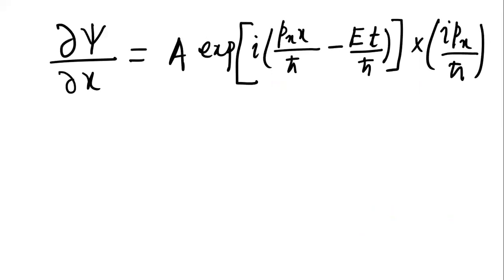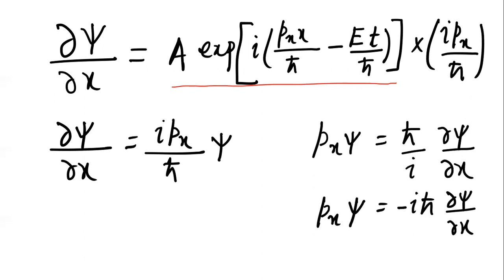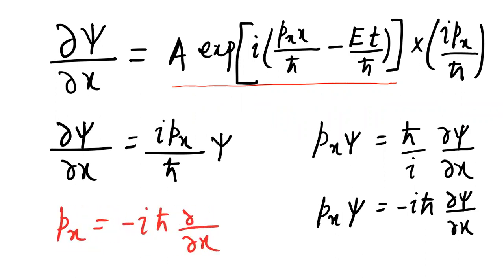Similarly, taking the partial differentiation of the wave function with respect to x gives A·e^{i(p_x·x/ℏ − E·t/ℏ)} multiplied by i·p_x/ℏ. So ∂ψ/∂x = i·p_x/ℏ · ψ, which gives p_x·ψ = ℏ/i · ∂ψ/∂x = −iℏ · ∂ψ/∂x. Thus the momentum operator in the x direction is p_x = −iℏ · ∂/∂x.